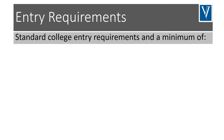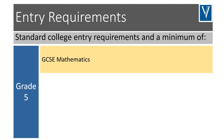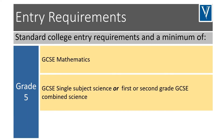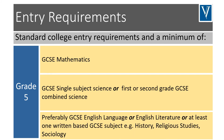To gain entry onto environmental science, you need a grade five in maths, a grade five in science — which can be a GCSE single subject science or one of your combined science grades — and a grade five in GCSE English language or literature, or another predominantly written-based GCSE subject, for example, history.